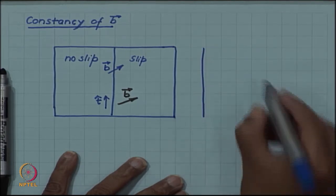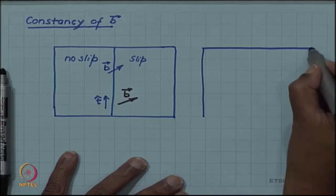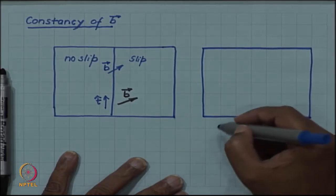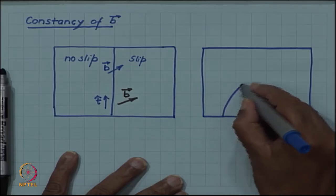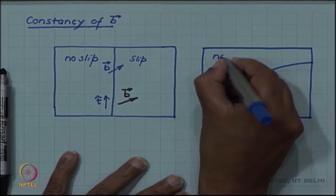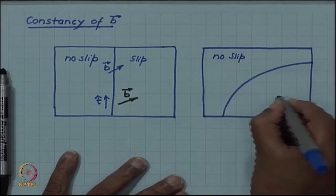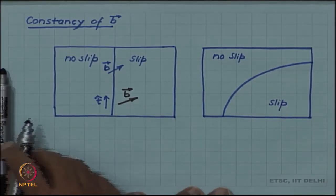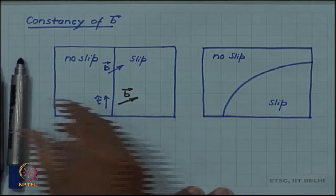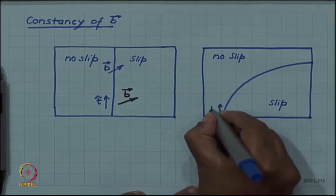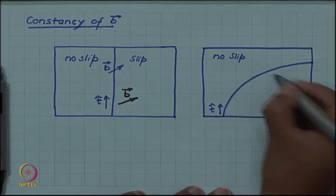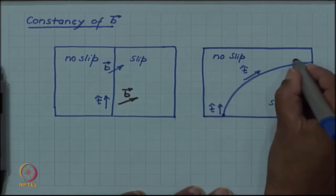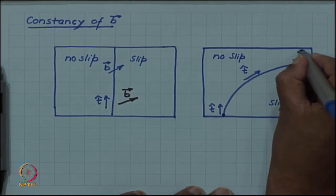For a straight dislocation, the T vector is also constant along the line. But an interesting situation occurs if we consider a curved dislocation line. If we have a curved dislocation line, the boundary between slipped and unslipped regions can be curved as well. In this case the T vector will be changing along the dislocation line — the T vector at one point will be tangent to the dislocation line at that point, whereas the T vector at another point will have a different direction.